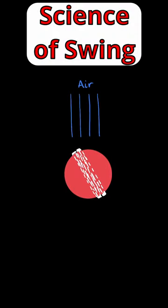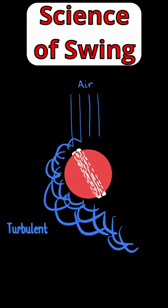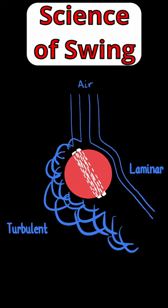Then, as the ball moves towards the batter, it pushes through air, which exerts forces on the ball. Because the seam points this way, the air that flows across the left side gets disrupted by the roughness of the stitching. This turbulent airflow seems to stick to the ball for a long time. On the other side, the ball is smooth, so we get smooth or laminar flow, which separates quite early from the ball.